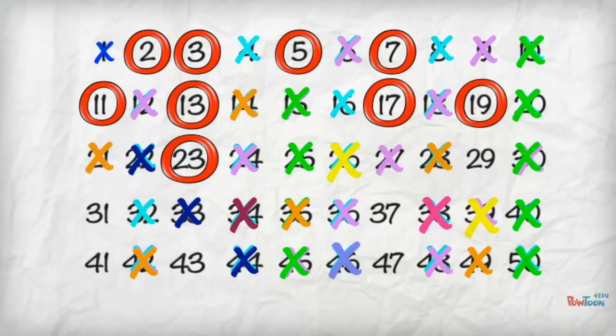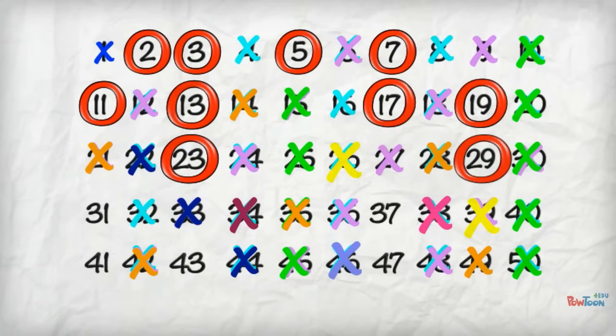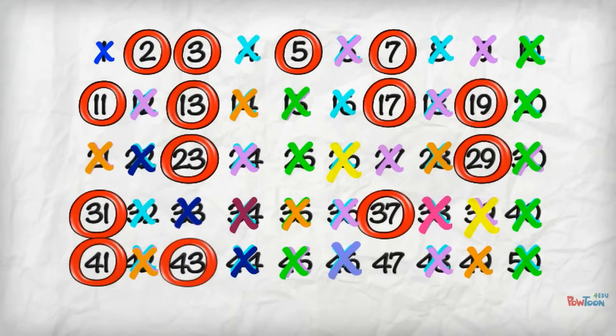Now you can see the remaining primes up to 50. 29 is a prime, 31, 37, 41, 43, and 47.